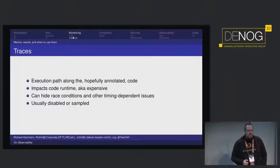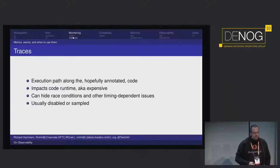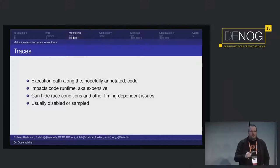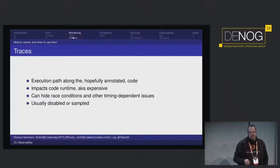Traces in networking don't happen very often unless you're using software-defined stuff, but this is coming more and more into our field. Traces basically tell you how a code path goes in your program, in your controller — maybe someday even your switch — so you can understand why things are doing something in a certain way. They are pretty expensive to run, so usually they're off or just sampled. And some issues might magically go away when you trace, because tracing costs extra execution time, potentially hiding race conditions.